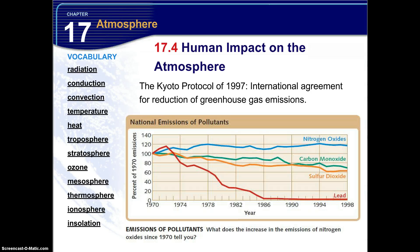The Kyoto Protocol of 1997 is an international agreement for the reduction of greenhouse gas emissions. Looking at the chart of national emissions of pollutants — expressed as a percent of 1970 emissions for four main pollutants — the question is: what does the increasing emissions of nitrogen oxides since 1970 tell you? By examining each graph, you can see how emissions changed from 1970 until 1998.